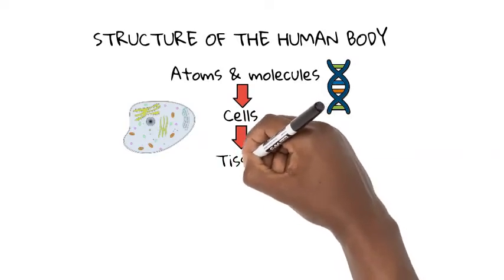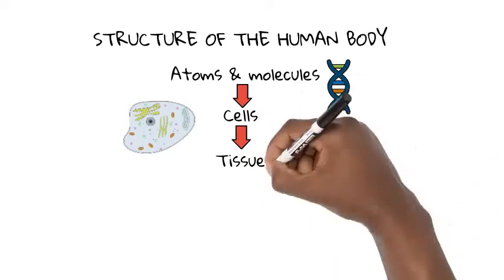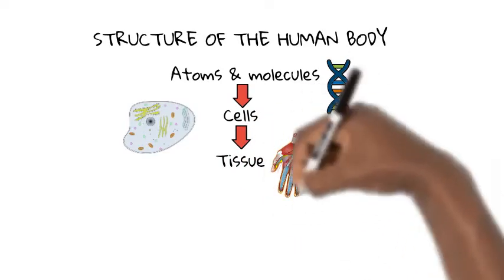Third, there's tissue. Now, cells come together to form tissue like the skin and muscle tissue.